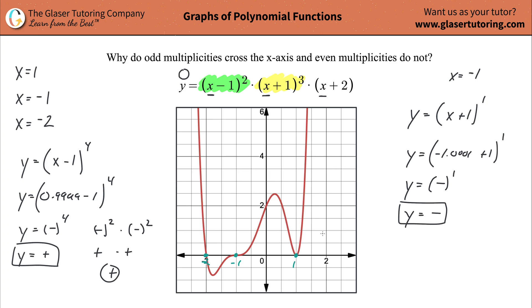It's so much better to understand it rather than just memorize it, right? And it's really not that bad. That's kind of the whole idea about math — a lot of times we just memorize things. Odd multiplicities cross, even multiplicities don't cross. Okay, why? We don't really understand why, we just memorize. Don't memorize — what fun is that? It's more powerful to understand something, understand how it works and why it happens. And then if the problems change, like if someone adds a negative sign outside the parentheses, you won't be lost — you'll know how to approach it.